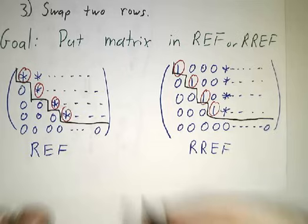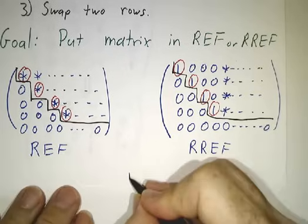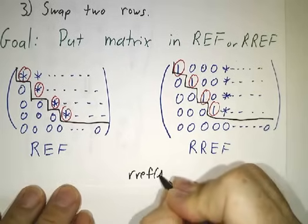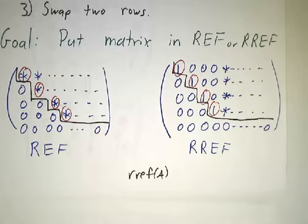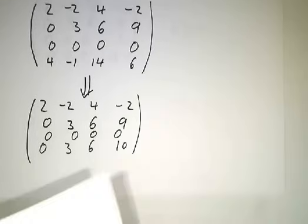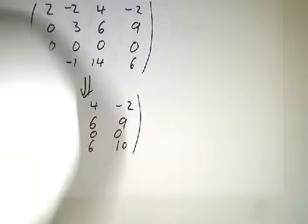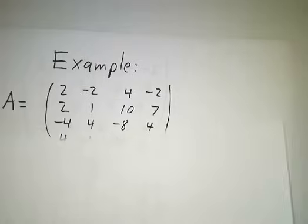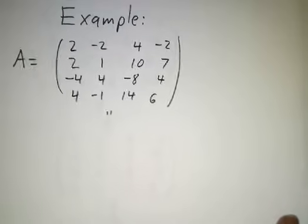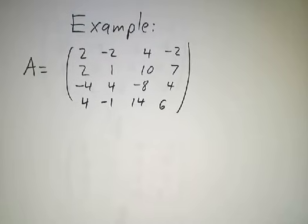If you're working in MATLAB, you can get the reduced row echelon form by typing RREF of the name of your matrix, and MATLAB gives you the reduced row echelon form. As an example, let's start with the following matrix and systematically do row operations to turn it into row echelon form.